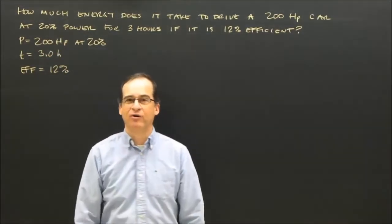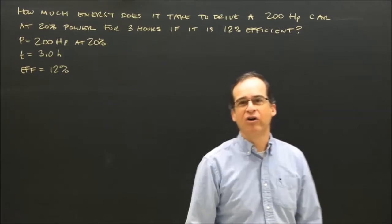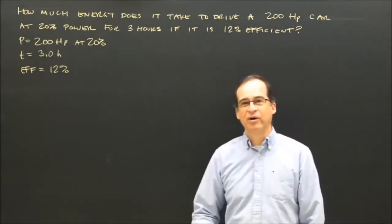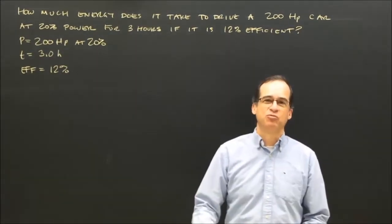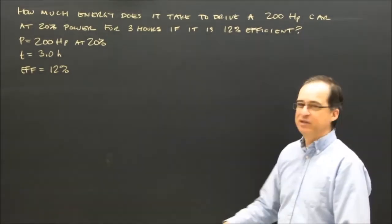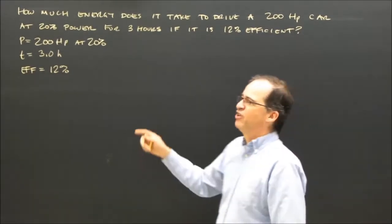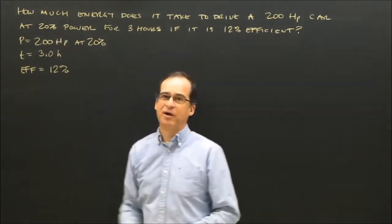This part here, the 20% power, that's because when you're driving a car at 100 kilometers per hour on a highway, you don't have the engine revving at high speed. You really pull back on the gas a little bit. So you're not using all the power of the engine, we're using only 20% of the power.